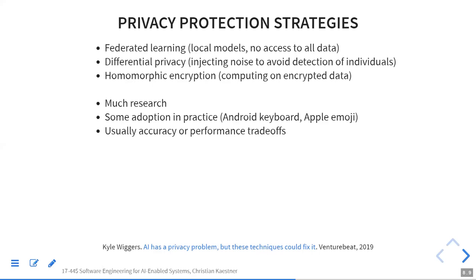With differential privacy, defenses typically happen by injecting specific noise into the training data so individuals can no longer be identified. Third, there's a lot of formal research on homomorphic encryption, where you can encrypt the data and still compute on encrypted data — so the machine learning algorithm never sees the unencrypted data but still works.